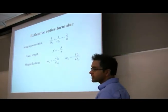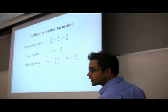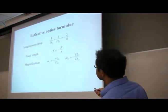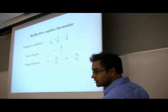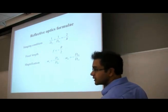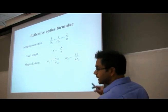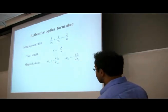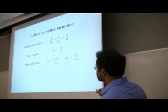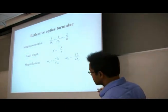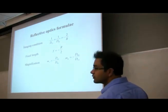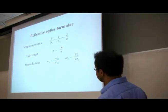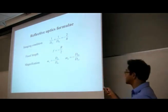The imaging condition for reflective optics is exactly the same as for lenses, using the same sign convention: 1 over the image distance plus 1 over the object distance equals 1 over the focal length. For a spherical mirror, the focal length is half the radius of curvature, and it's negative in this case because we picked a convex shape to the left. Lateral magnification is defined the same way — image distance divided by object distance. Angular magnification is the inverse in this case.